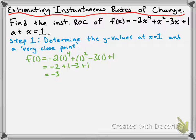Now we want to find the y value at a very close point. When I say very close point, I mean a point that has an x value very, very close to x = 1. To get that, you can just take x = 1 and add 0.001 to it. So we're going to be looking for f(1.001) — a point with a very slightly different x value.